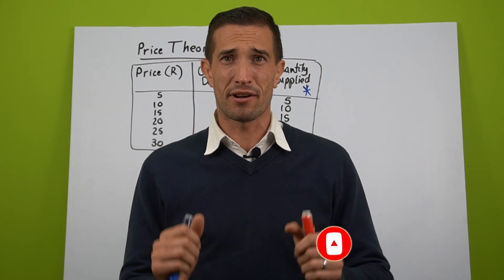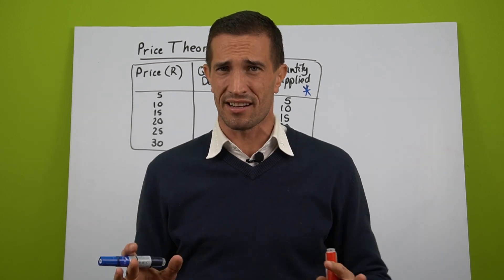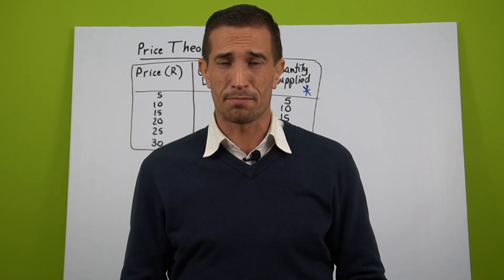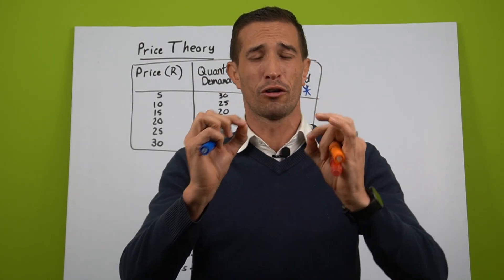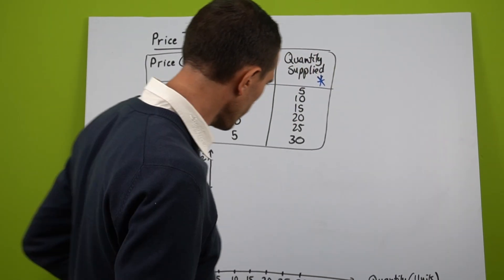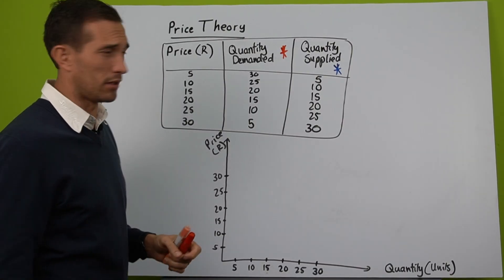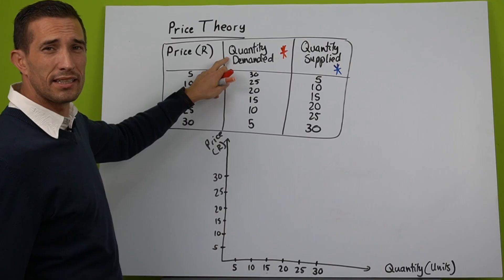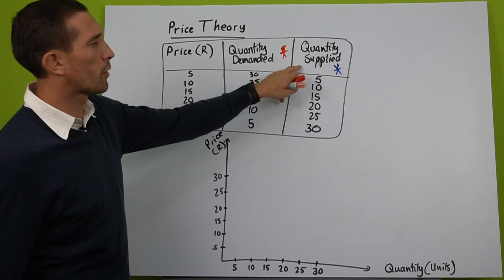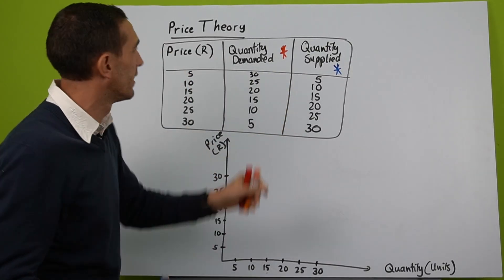Right now I'm going to explain the price theory on how it works. You would have seen in the previous video some exercises that you could practice, but now I'm going to physically demonstrate how you do it. This is of crucial importance. I have drawn up my table, my demand and supply table. You can see the price per unit, this is my quantity demanded unit, and my quantity supplied unit.